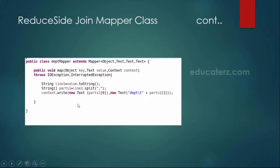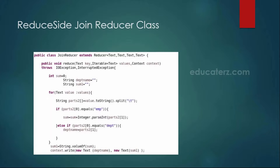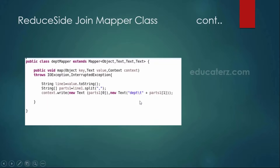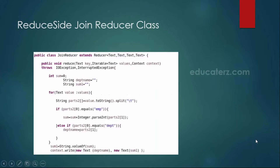Finally, all of the employee mapper and department mapper output goes into the shuffle and sort phase, and after that it goes into the reducer phase. In the reducer, whatever values we got, we are splitting them by the tab character. The reason is that all your values are using department\t or employee\t. After splitting by tab, we check whether the value is equal to employee. If it contains employee, then we are going to add those particular salaries — doing the summation: sum equals sum plus that value.